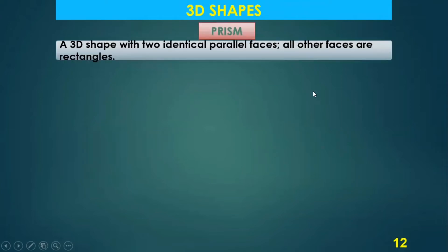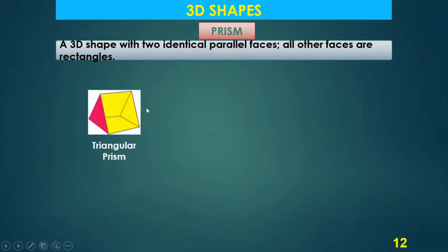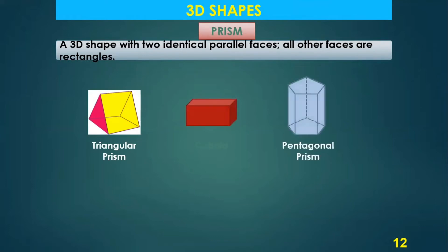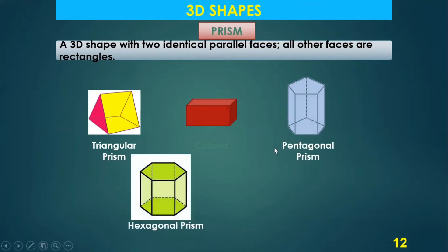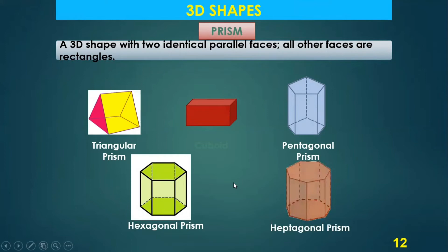A prism is a 3D shape with two identical parallel faces and all other faces are rectangles. You can see a triangular prism here — the bottom and top are triangular, so sidewise you will find three rectangles. This is a cuboid, which you can call a rectangular prism. A pentagonal prism has base and top as pentagons. A hexagonal prism has base and top as hexagons with all side faces as rectangles. A heptagonal prism — a seven-sided figure — has base and top as heptagons, and the lateral faces are rectangles.